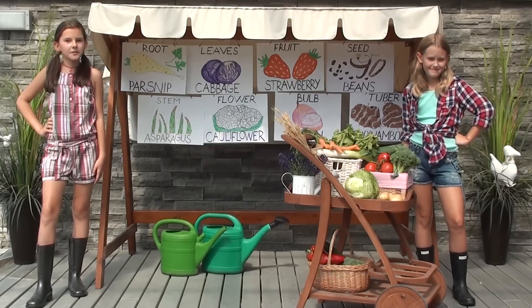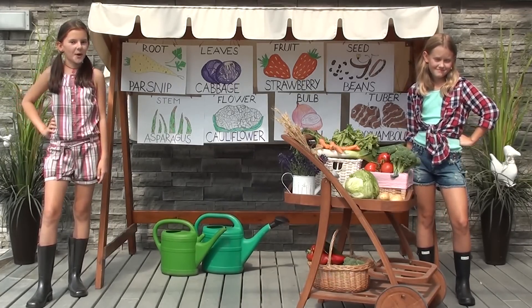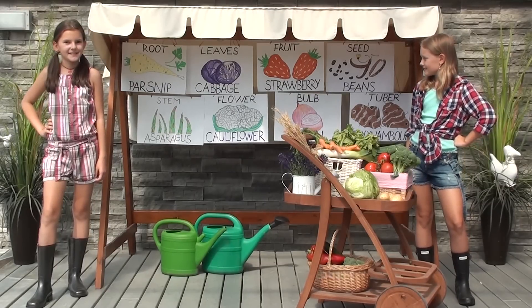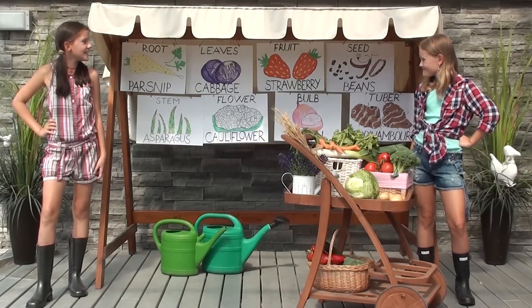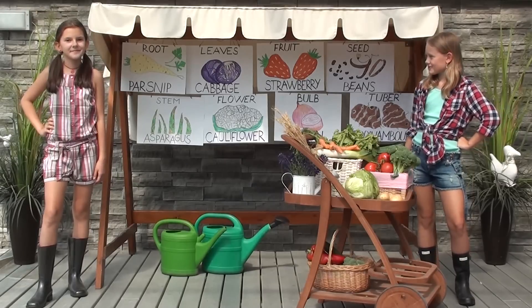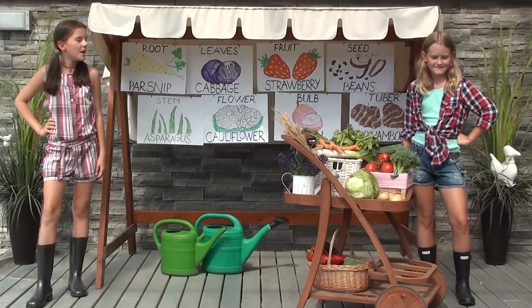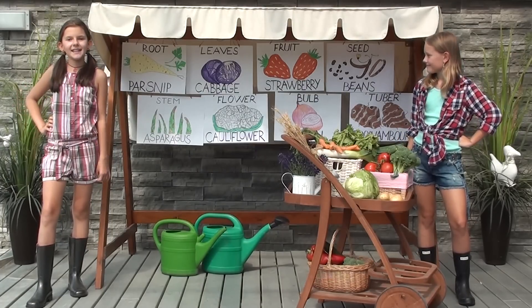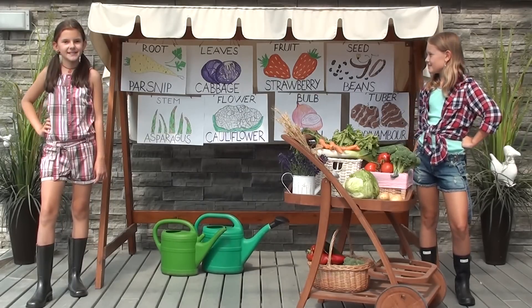Which part of the plant does the cauliflower come from? The cauliflower is the flower. Which part of the plant does the strawberry come from? The strawberry is the fruit. Which part of the plant does the onion come from? The onion is the bulb.